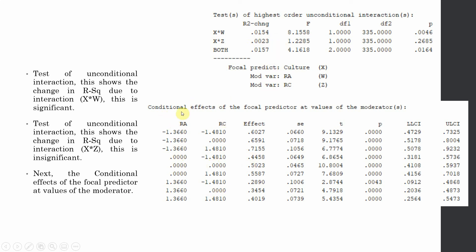This shows the conditional effects of the focal predictor — culture — on organizational performance at different levels of both moderators, along with the effect size of culture on performance. All these effect sizes are significant — there is no zero between the lower and upper confidence interval bounds. If no zero falls between the confidence interval bounds, the effect is significant, meaning the impact of culture on performance is significant at these moderator values.